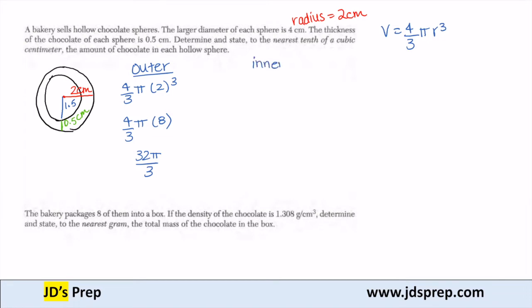For the inner sphere, the inner sphere has a radius of 1.5. So the volume is 4/3 π times 1.5 cubed, which simplifies down to 9π over 2.